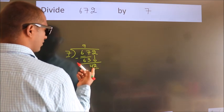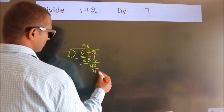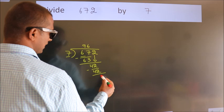When do we get 42? In the 7 table, 7 times 6, 42. Now we subtract. We get 0.